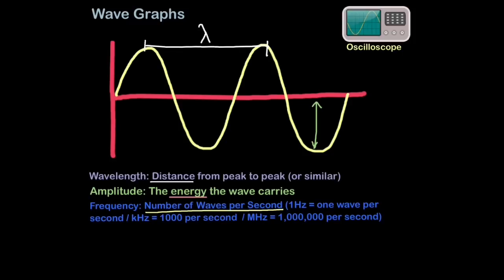Frequency can be calculated by dividing the number of waves you see over time in seconds. Frequency is measured in hertz, H-E-R-T-Z, or one hertz there. And that would be one wave per second. One hertz is one wave per second.